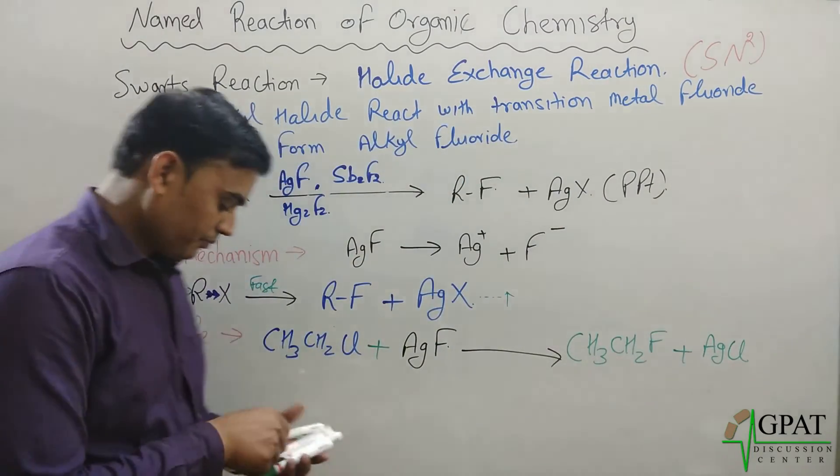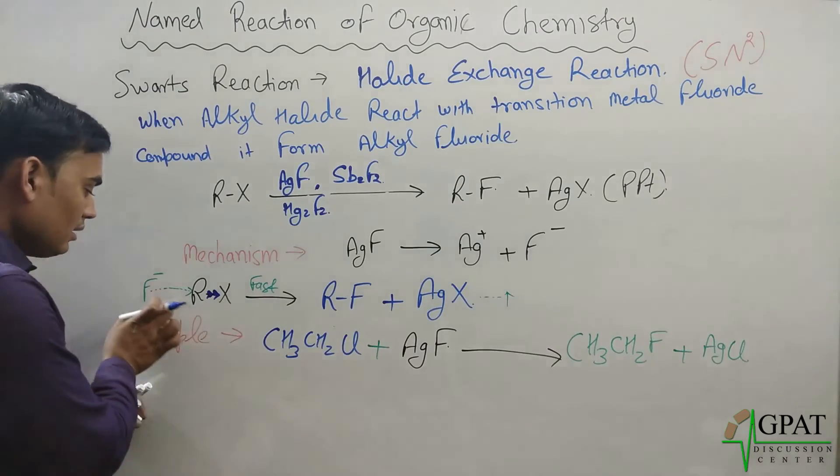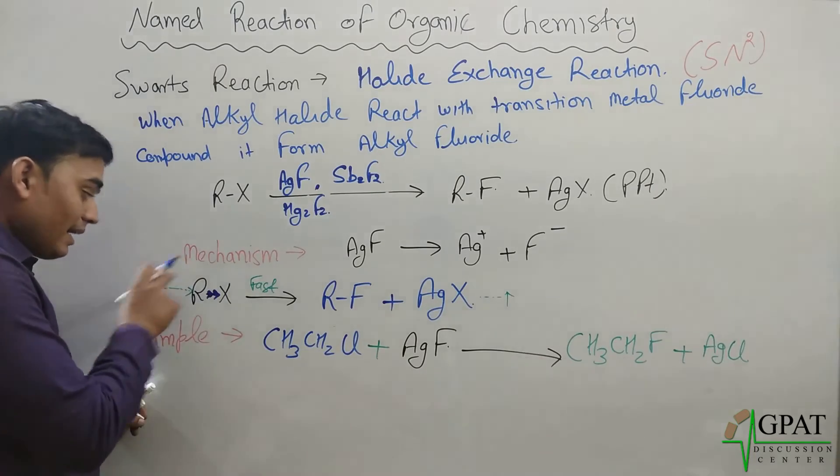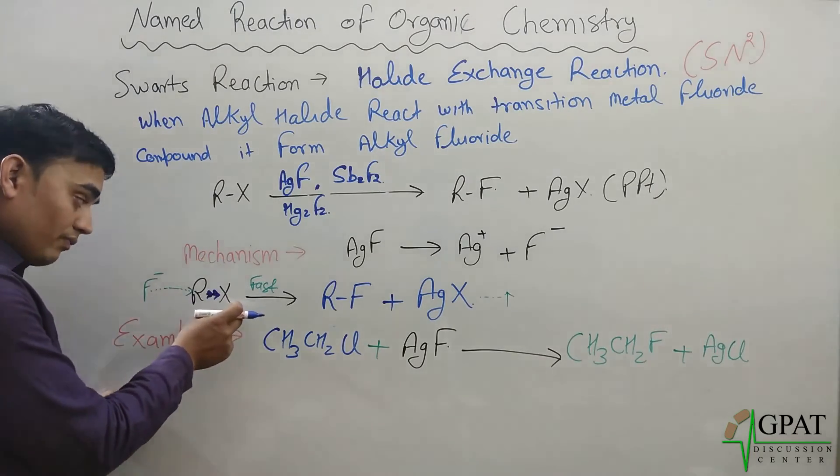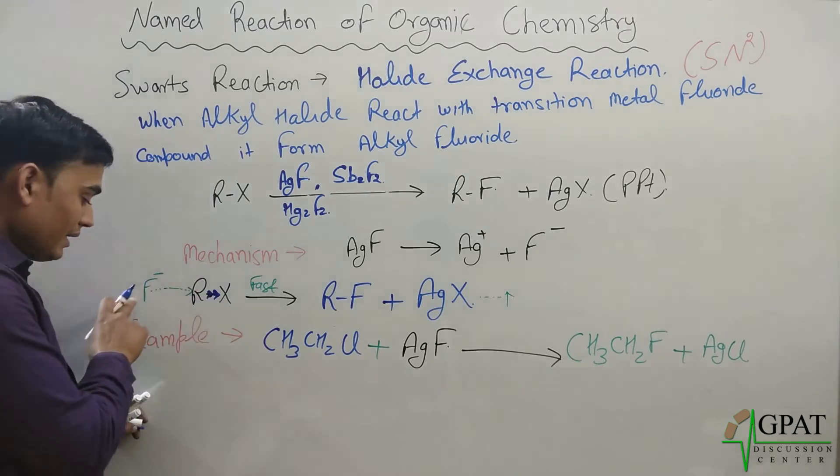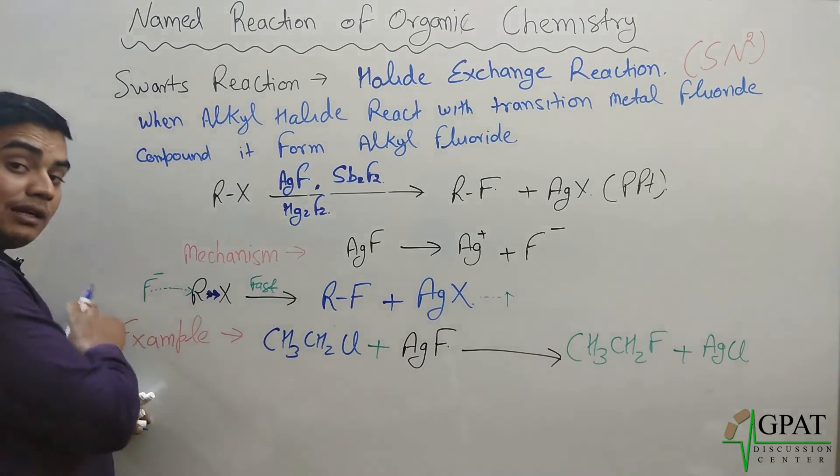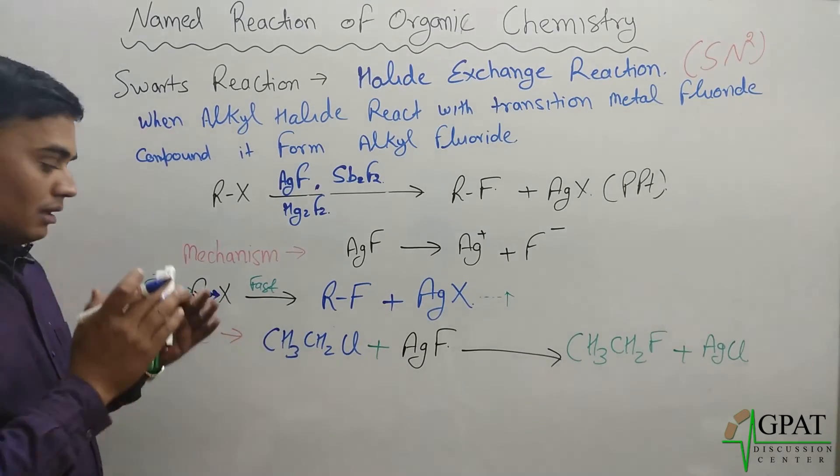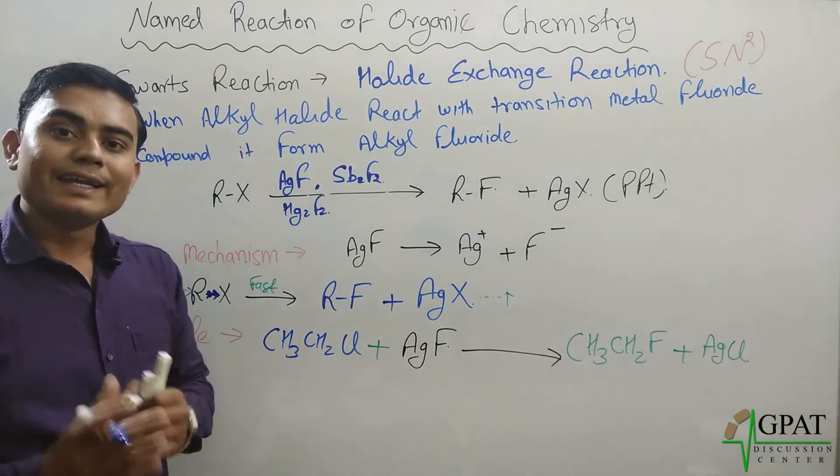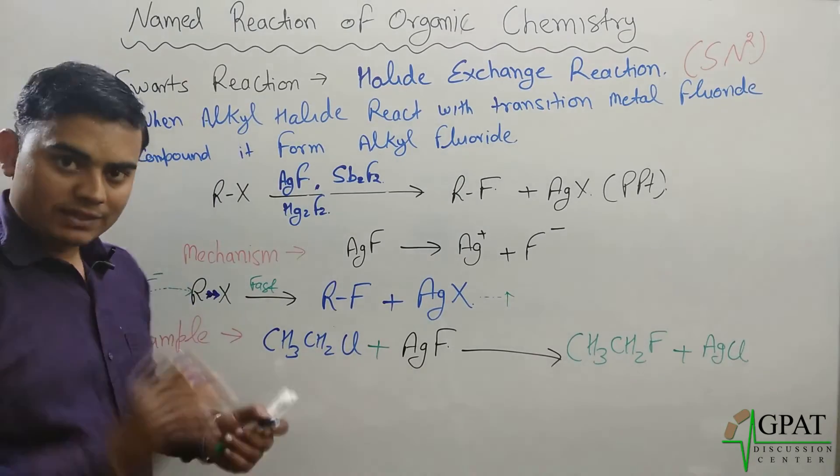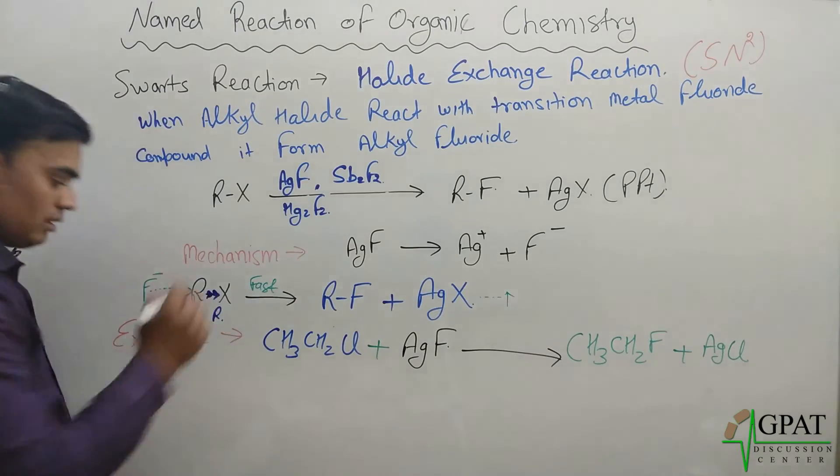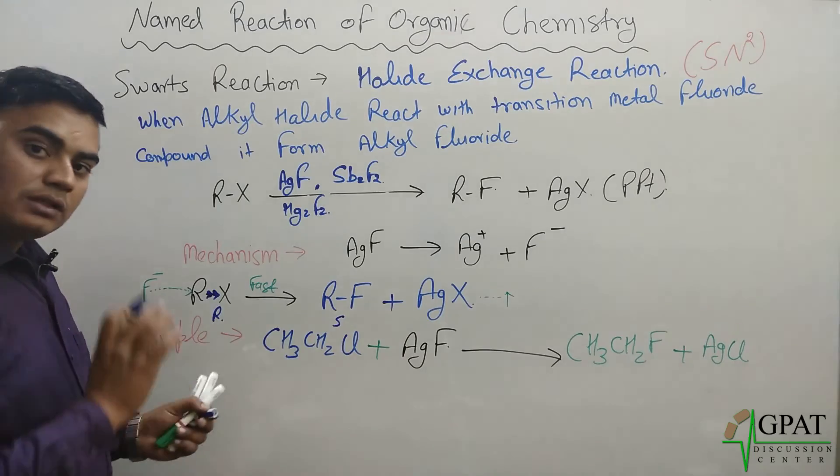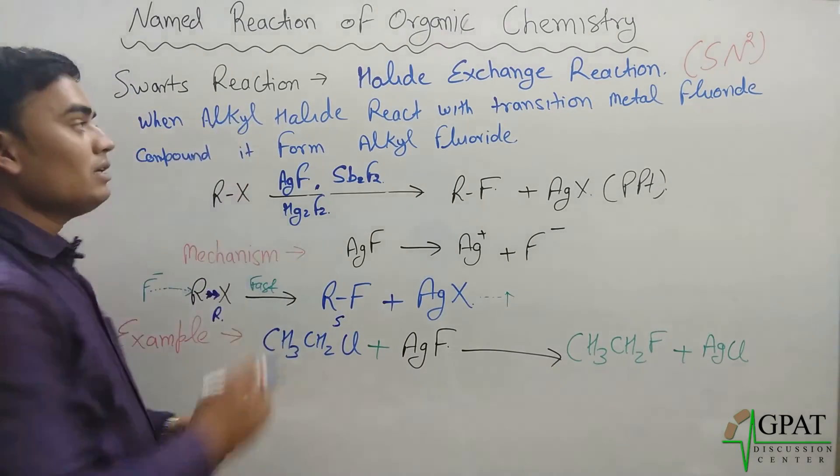Make sure one more thing. When this fluoride attacks on this alkyl group, it cannot attack in the direction of this halide. So this fluoride attacks from the back side of that halide. So that's why, the isomerism position will get changed. If firstly it was the R form, then resultant product will be S form. So the isomerism will get changed in the Swarts reaction.